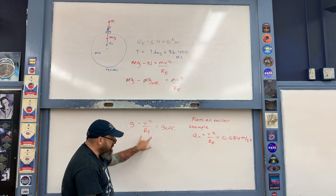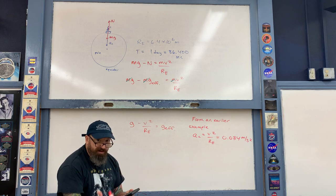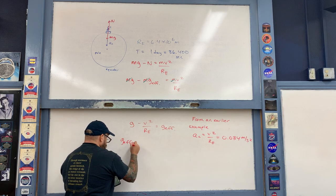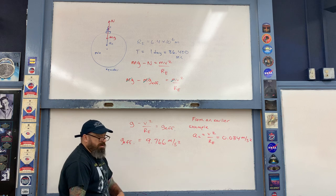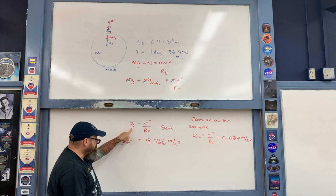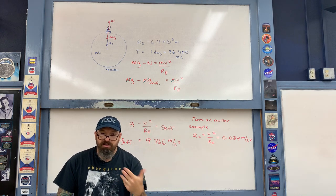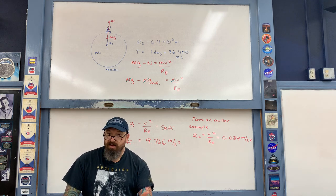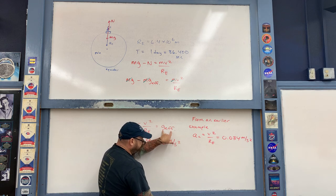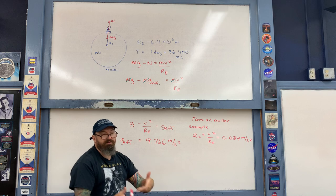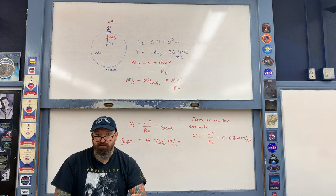So if we plug that value in and subtract from g — 9.8 minus 0.034 — the effective value of g that you feel if you stand at the Earth's equator is 9.766 m/s². The difference between this value and 9.8 m/s² is so small that you're never going to feel it with your senses. But it is detectable — for example, by using Foucault's pendulum. Essentially, Foucault's pendulum is designed to detect the effective value of g, physically detecting the fictitious force exerted upon it as the pendulum oscillates at the surface of the rotating Earth.